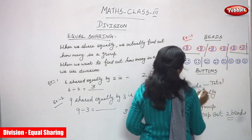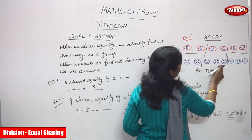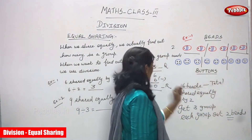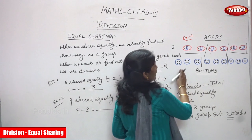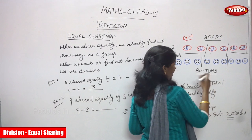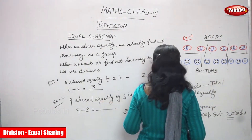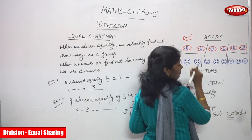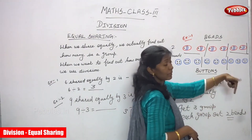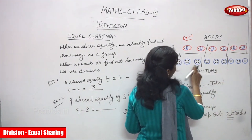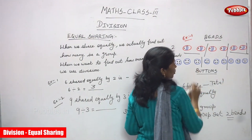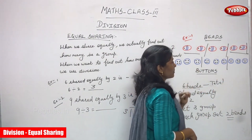That is 3 again. There are 9 buttons total, shared equally by 3. I am giving 3 buttons to one friend, 3 buttons to another, and 3 buttons to another. That is 3 groups. In each group, how many buttons? 3 buttons. 1st group: 3 buttons, 2nd group: 3 buttons, 3rd group: 3 buttons.